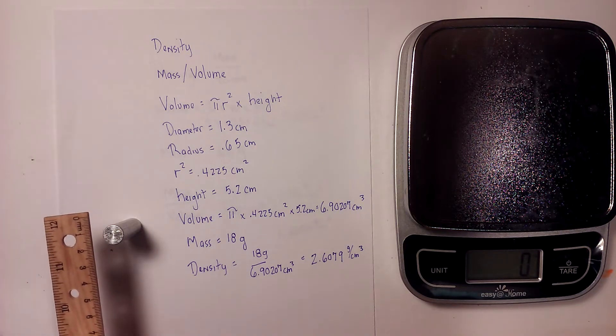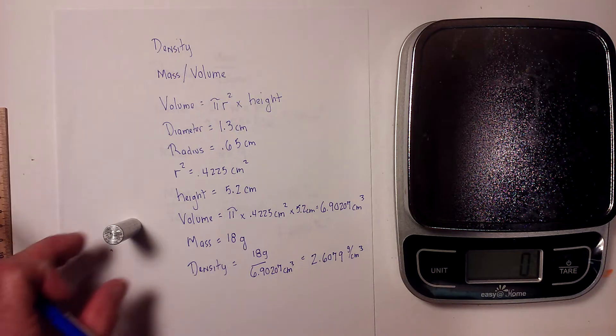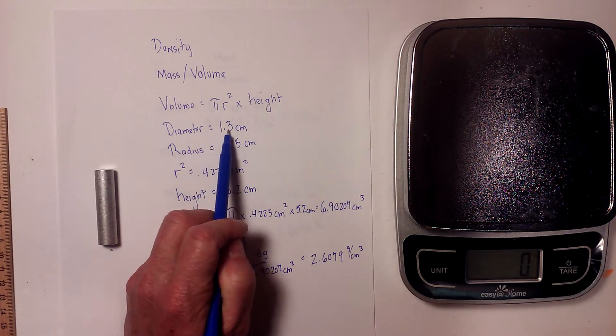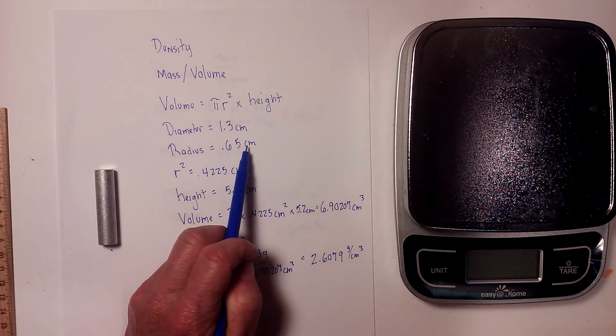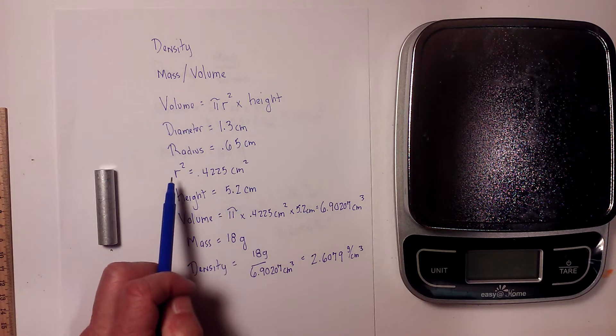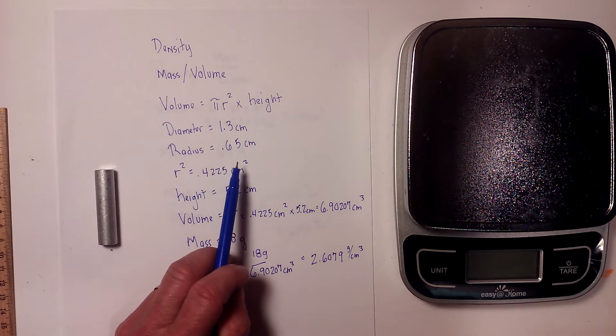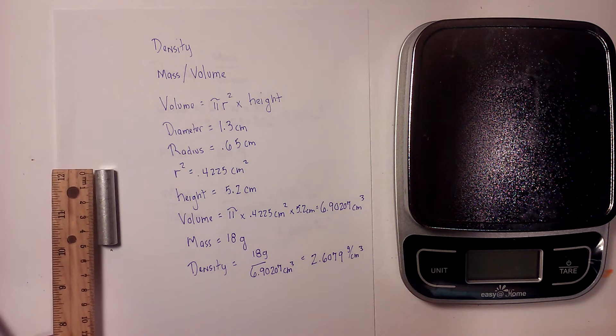I measure the diameter which is straight across, then divide that by two. I went ahead and pre-measured some things, so the diameter was 1.3 centimeters. When I divided that by two, that gave me 0.65 centimeters, and then when I squared that it was 0.4225 centimeters squared. Next I measured the height, and that gave me 5.2 centimeters.